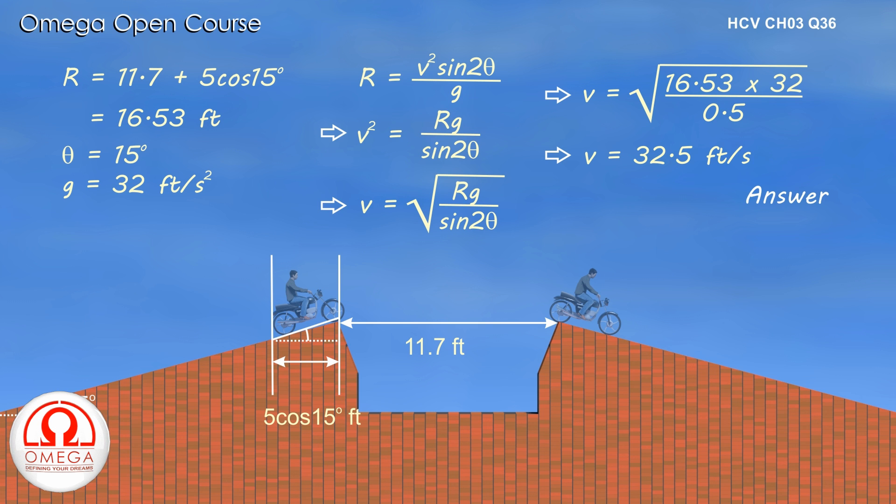You can arrive at the answer given in the book if you take the inclination of the bike to be 30 degrees instead of 15 degrees for the purpose of finding the range. If you put θ = 30° in place of 15°, the range turns out to be 16.03 feet instead of 16.53 feet.